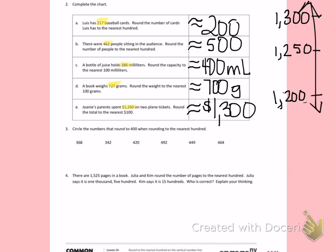Number 3, circle the numbers that round to 400 when rounding to the nearest 100. 386 is very close to 400, I would round that up.